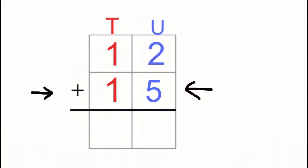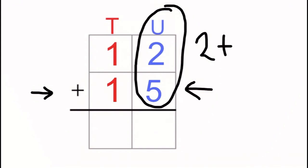The way we do that is we start off by looking just at this units column here and we add up all of the numbers in there. We can see that we have to add two, add five, which we know is seven. That seven can go straight under the units column.